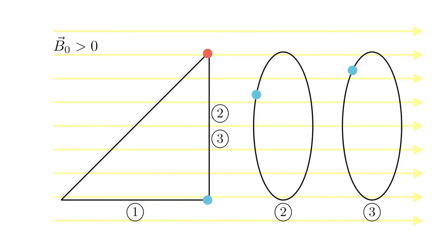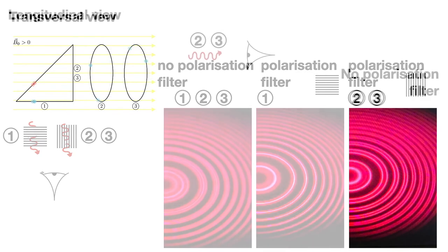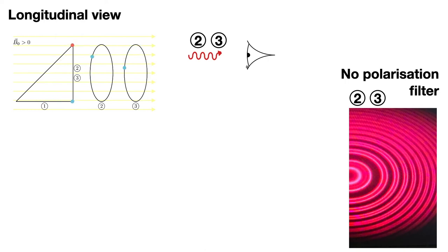The light emitted by substitute electrons 2 and 3 is linearly polarized light. Perpendicular to the magnetic field, it is observed as polarized perpendicular to the B field. Parallel to the magnetic field, the two electrons emit right and left circularly polarized light. In a transverse view, light emitted by substitute electrons 1, 2, and 3 can thus be observed: the light of electron 1 is linearly polarized parallel to the magnetic field, while that of electrons 2 and 3 is linearly polarized perpendicular to the magnetic field. In longitudinal view, only light from substitute electrons 2 and 3 can be observed, and their light is circularly polarized in opposite directions.